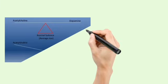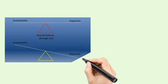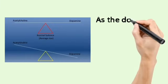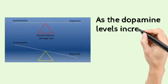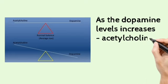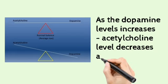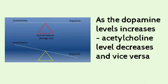In general, the activity of acetylcholine and dopamine will be equal and normal. So as the dopamine level increases, acetylcholine level decreases, and vice versa.